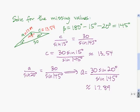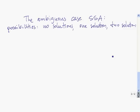Now let's get to the ambiguous case, which is the side-side-angle case. The side-side-angle is called the ambiguous case because we might have no solutions to our triangle, we might have one solution, or we might have two solutions that have the specified measurements.